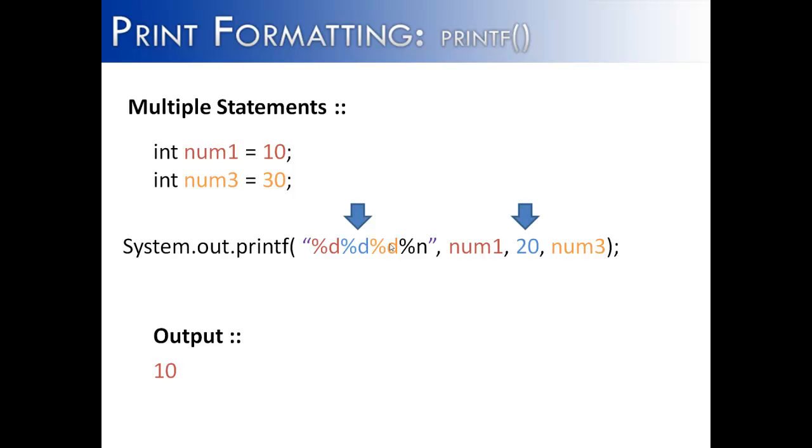Then it's going to go to the second placeholder, which is also a %d, and it's going to find the number 20. So it would print the number 20 right next to 10. And then finally, for this particular string, it's going to look for this third %d placeholder, and it's going to find an integer, which is 30 right here. And it will print it out on the screen.